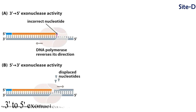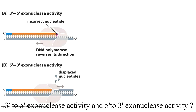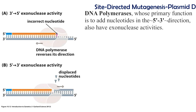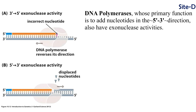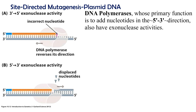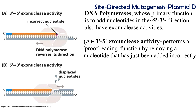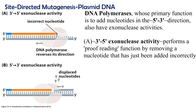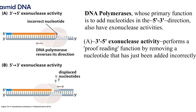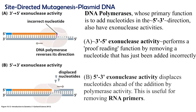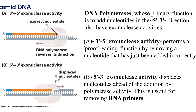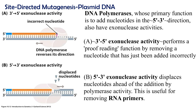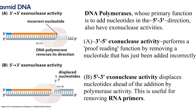What is the difference between 3' to 5' exonuclease activity and 5' to 3' exonuclease activity? DNA polymerases, whose primary function is to add nucleotides in the 5' to 3' direction, also have exonuclease activities. Firstly, 3' to 5' exonuclease activity performs a proofreading function by removing a nucleotide that has just been added incorrectly. Secondly, 5' to 3' exonuclease activity displaces nucleotides ahead of the addition by polymerase activity — this is useful, for example, in removing the primers.